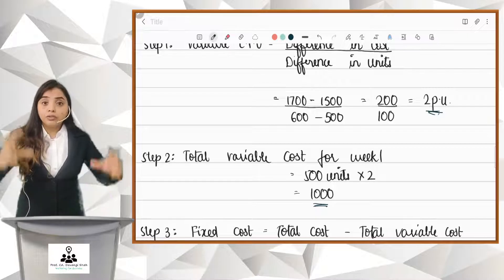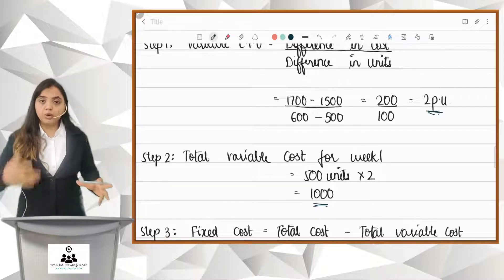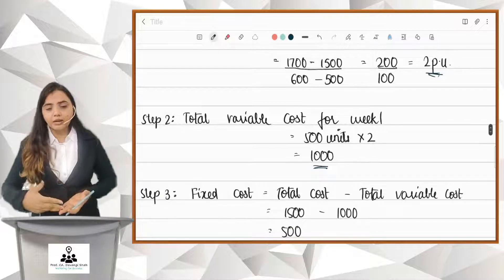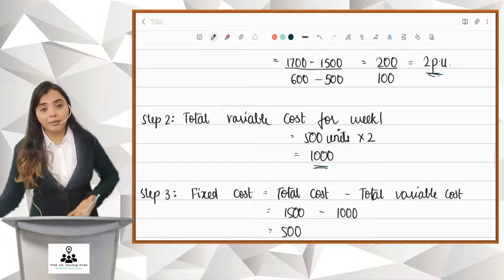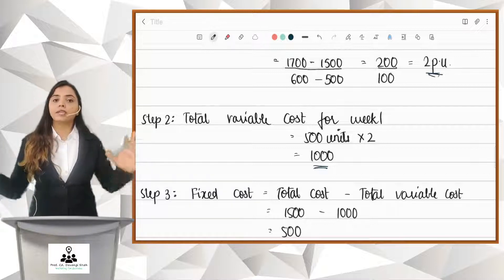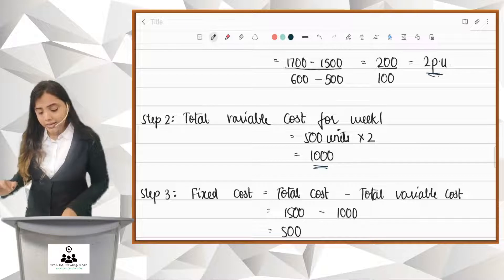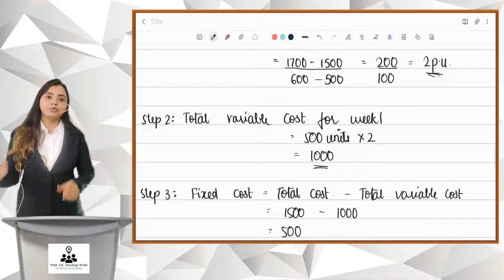So, in week 1, total variable cost is 1000. So, how much would be fixed? Step 3, total cost is 1500, out of which 1000 is variable. So, balance remains 500, that is fixed. So, friends, this is how we bifurcate the semi-variable cost into variable and fixed.